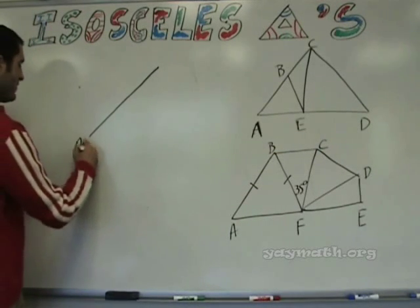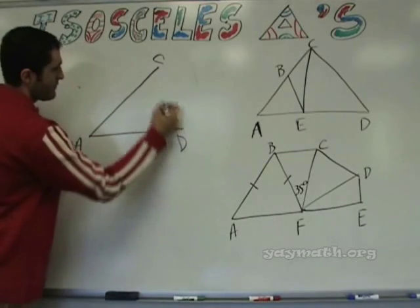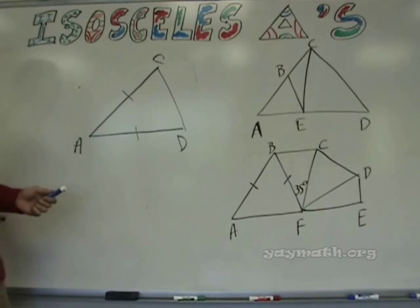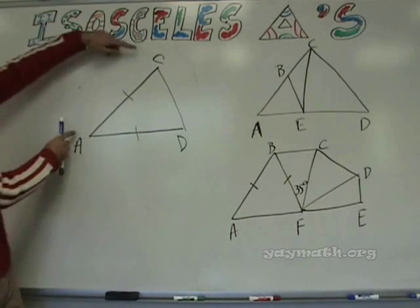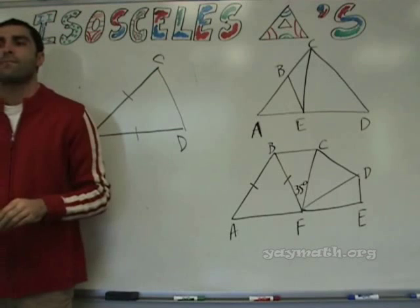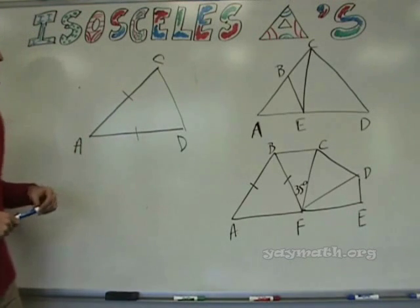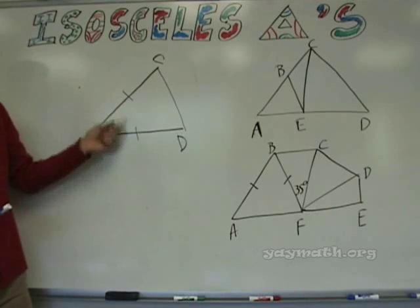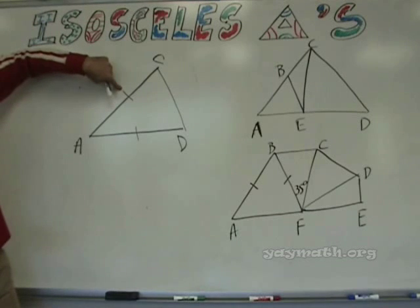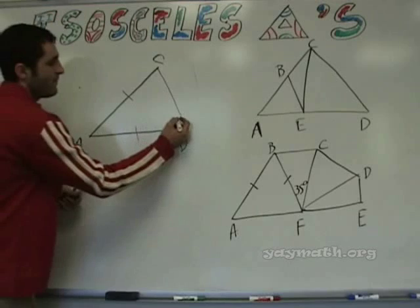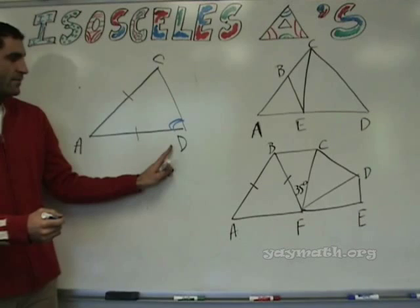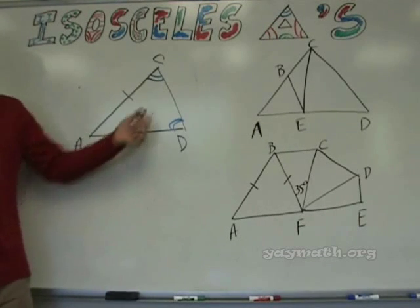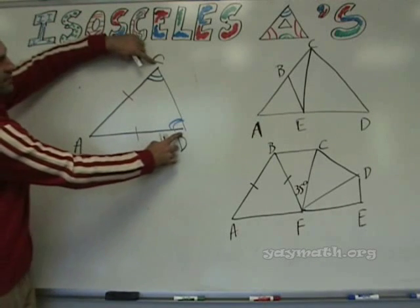Now just like before, which two angles are the same? It's saying if these two sides are the same, which two angles are the same? Angle C and D — no, angle A and C are not opposite. Angle C and D. Why? Because they are opposite the congruent sides. What angle is opposite AC? Angle D. And what angle is opposite AD? Angle C. But where the two congruent lines meet at angle A — angle A is not congruent to anything. The congruent angles are opposite the congruent sides.